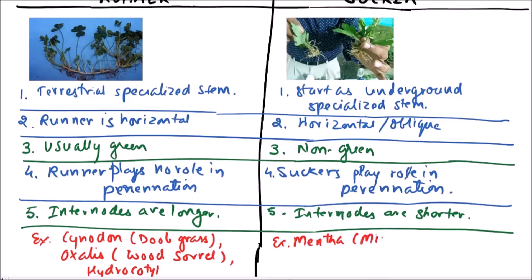In suckers, examples include Mentha, that is mint, then Chrysanthemum, also banana and pineapple are also examples of suckers.